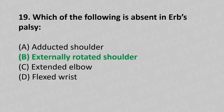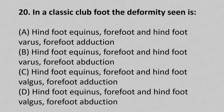Moving to our twentieth question. In a classic club foot, the deformity seen is: Option A, hindfoot equinus, forefoot and hindfoot varus, forefoot adduction. Option B, hindfoot equinus, forefoot and hindfoot varus, forefoot abduction. Option C, hindfoot equinus, forefoot and hindfoot valgus, forefoot adduction. And the answer is Option A: hindfoot equinus, forefoot and hindfoot varus, forefoot adduction.